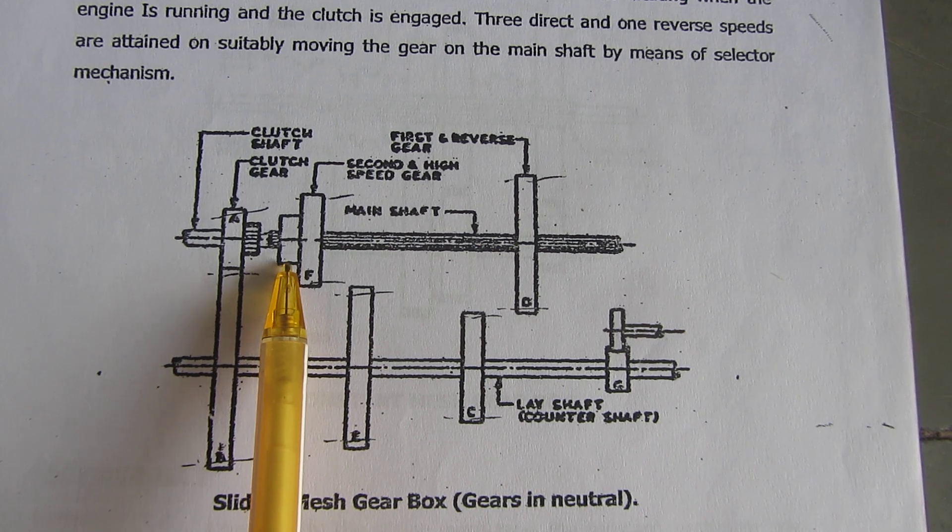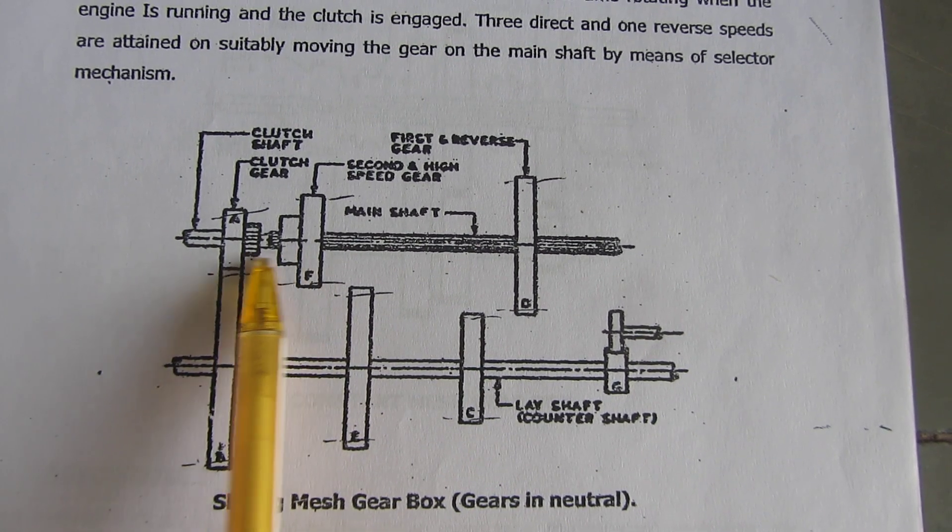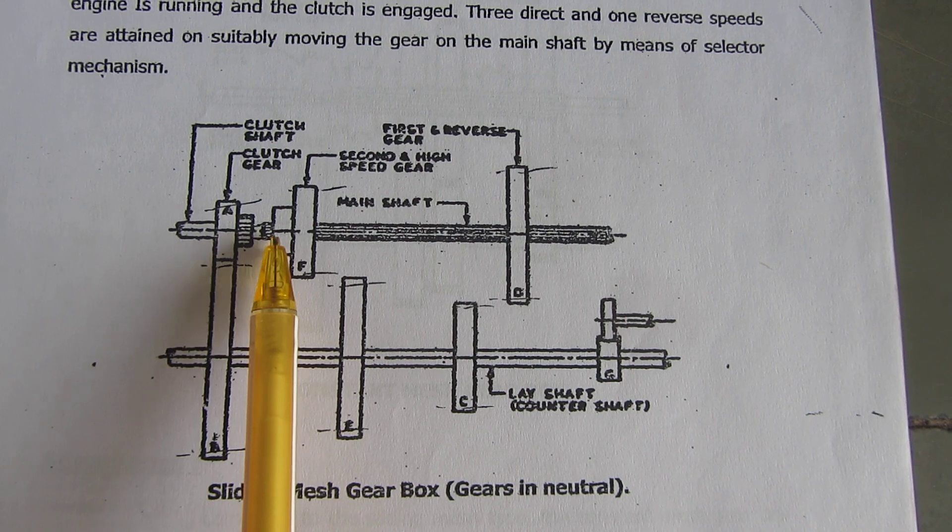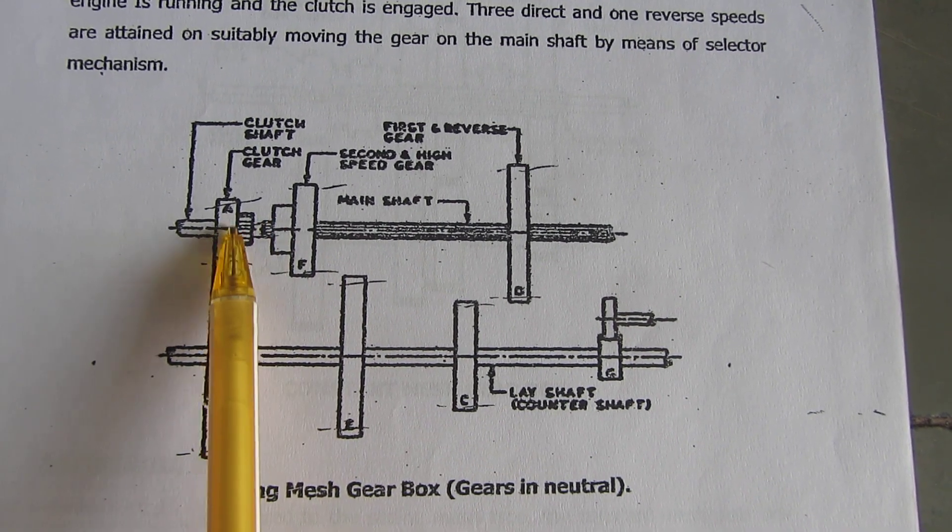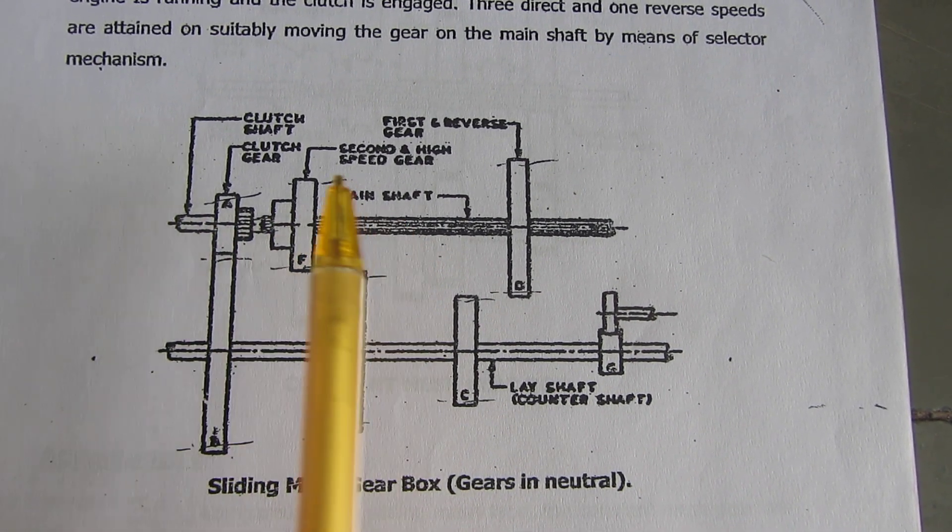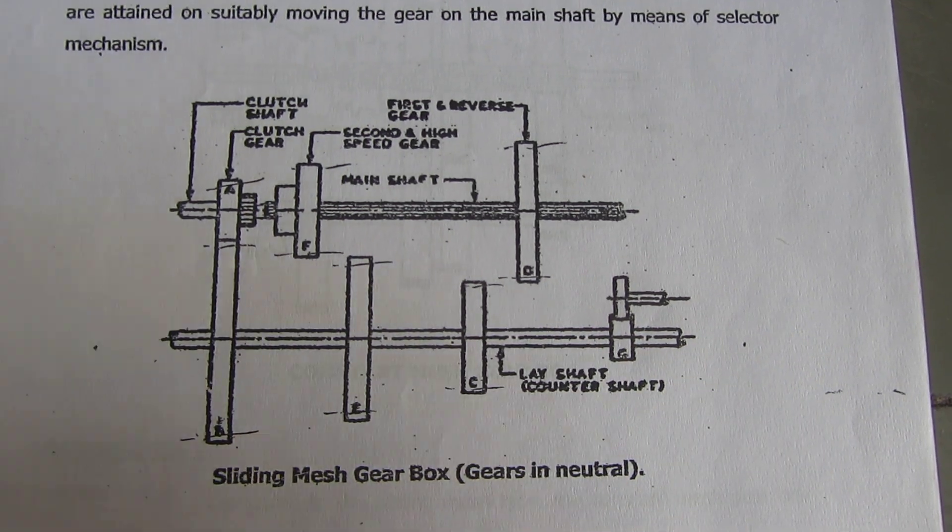This small gear is used when we want very high speed. Then this gear slides towards its left, engages with this gear, and direct motion of the clutch shaft is transferred to the main shaft. This is how the gearbox works.